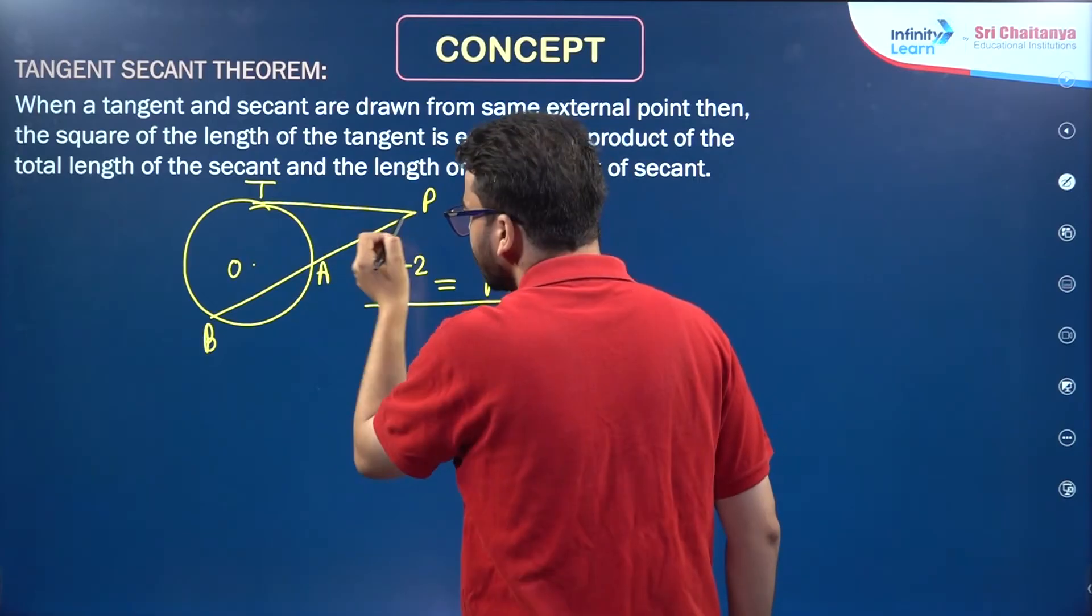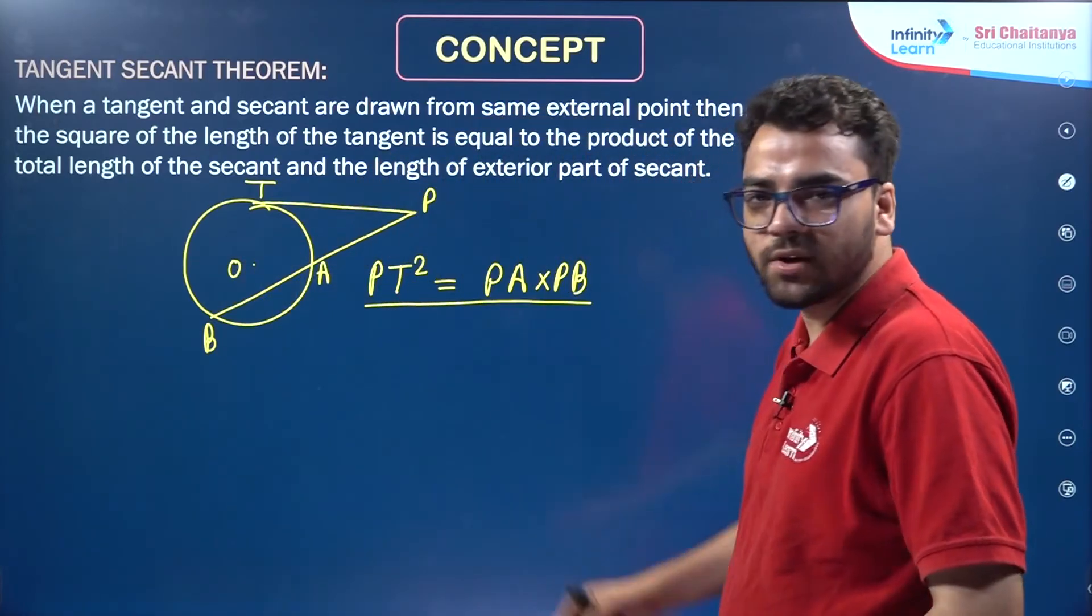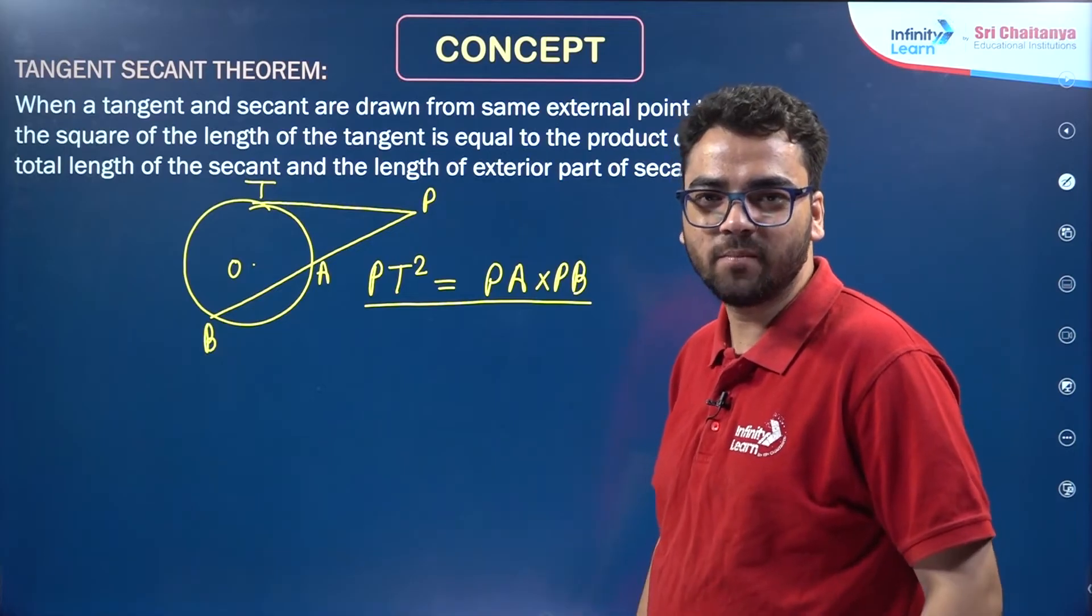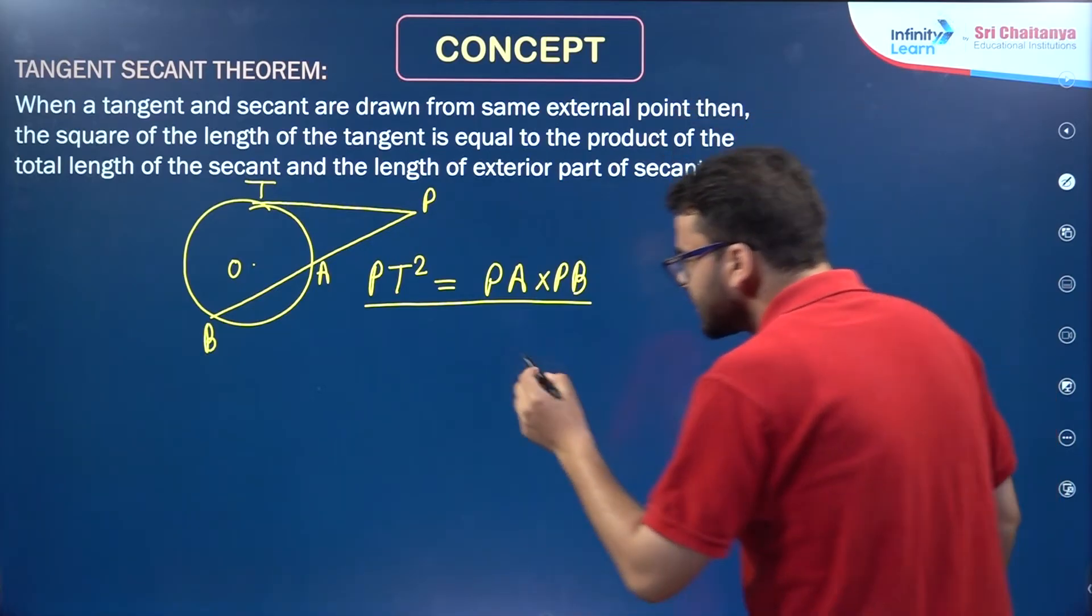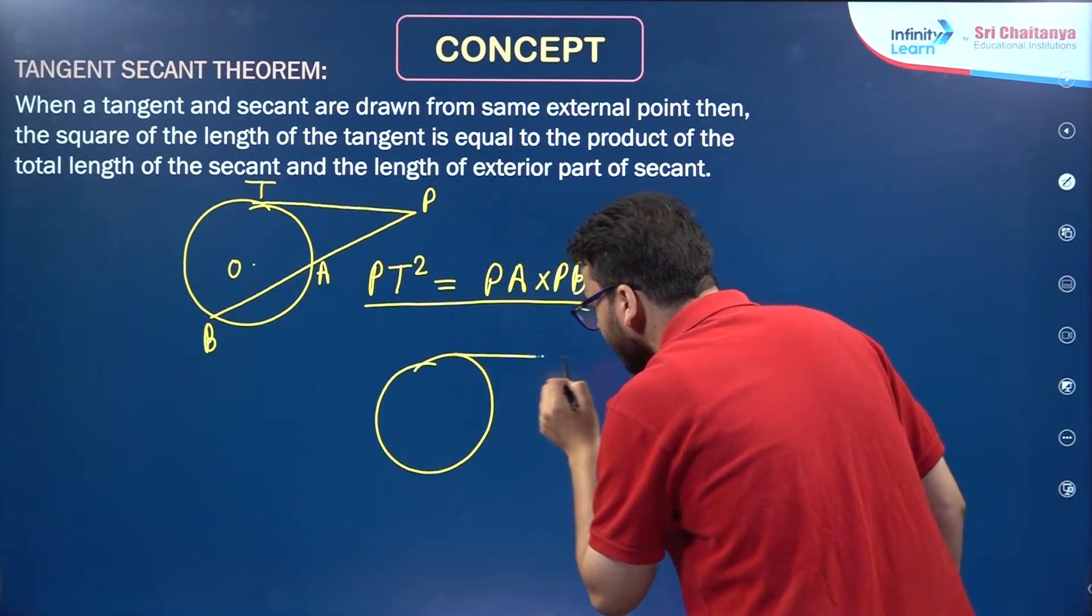PT² = PA × PB. We can also prove it. Let's prove the tangent secant theorem. Suppose I have a circle with the same situation.